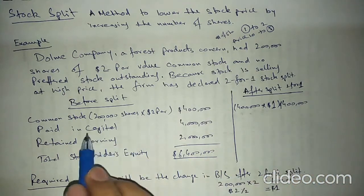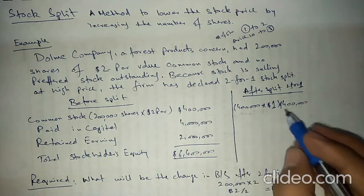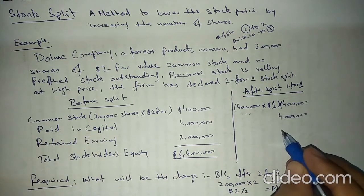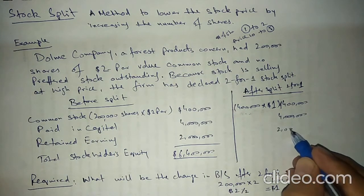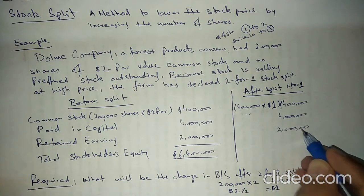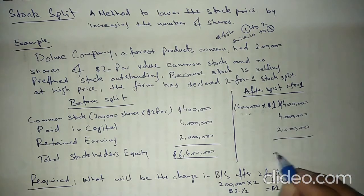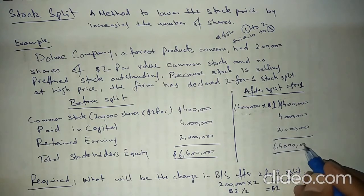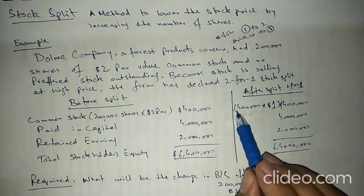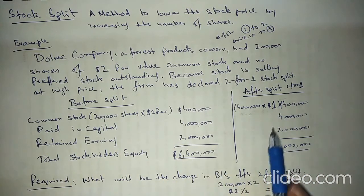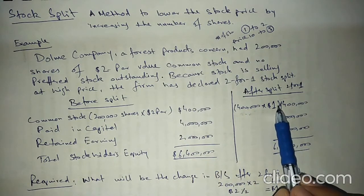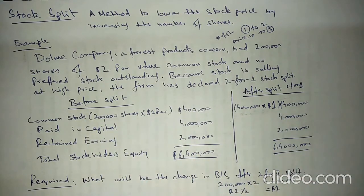After the stock split, common stock remains the same. There will be no change in paid-in capital, no change in retained earnings, and no change in total stockholders' equity after the stock split — only the number of shares and par value change. That's how we calculate new shares and new par value after the stock split. Thank you.